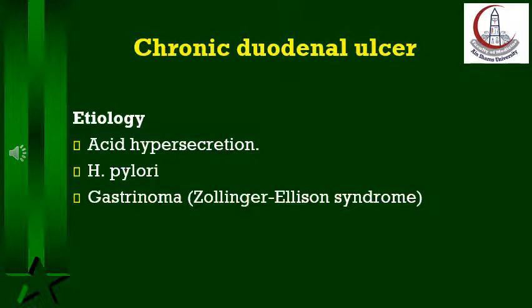Anterior wall ulcer may perforate into the general peritoneal cavity, while posterior wall ulcer may penetrate into the pancreas, may erode blood vessels causing bleeding, or may erode the gastroduodenal artery posterior to the duodenum with massive hematemesis. Anterior and posterior wall ulcers may co-exist and are described as kissing ulcers.